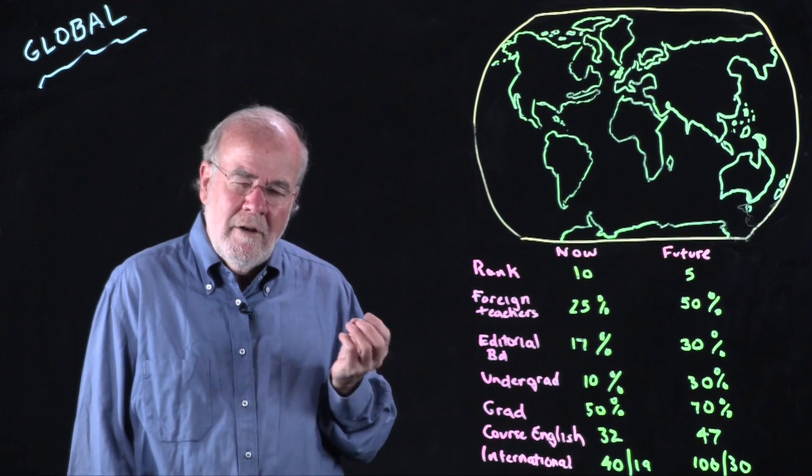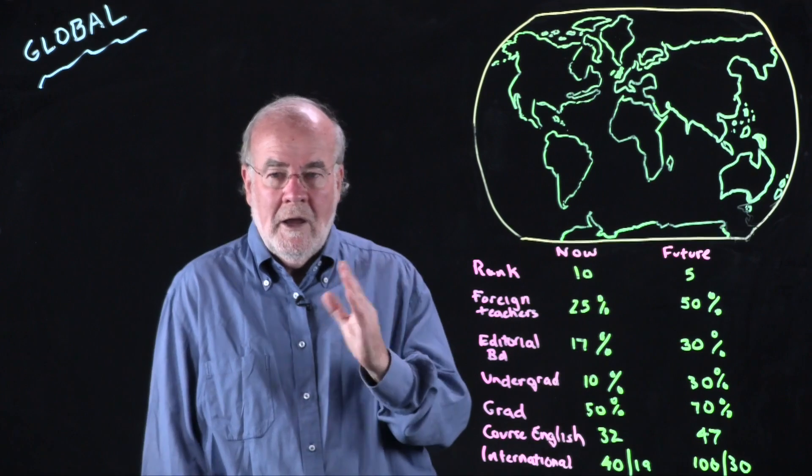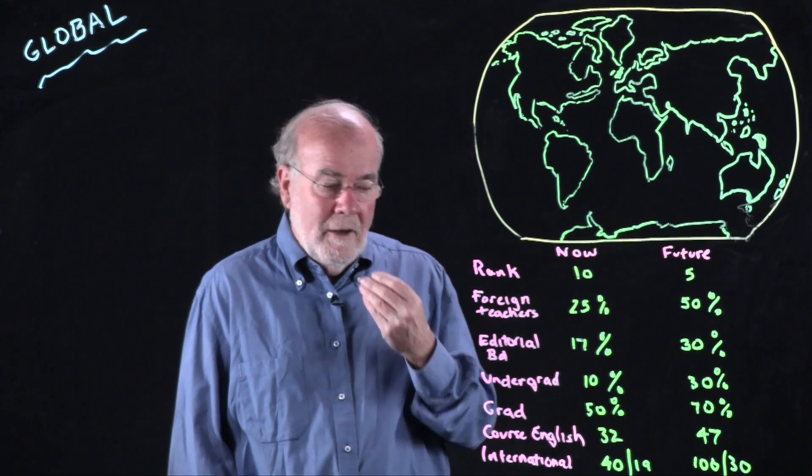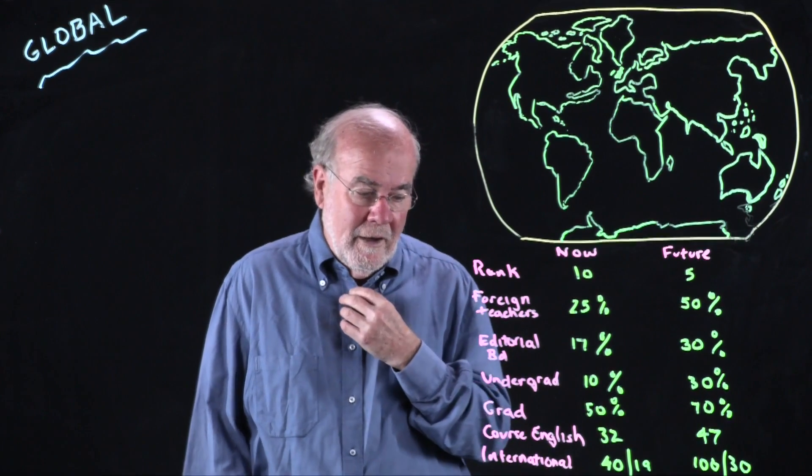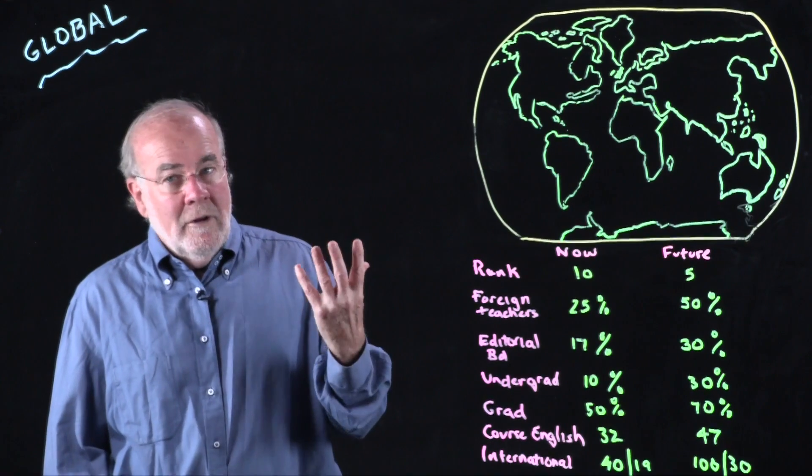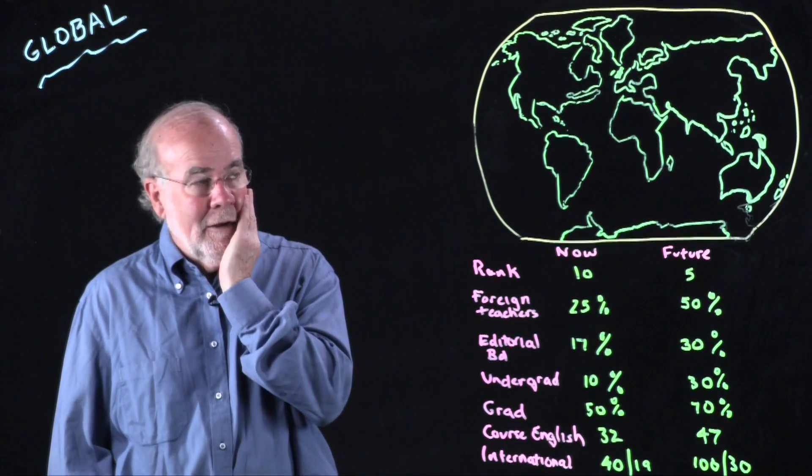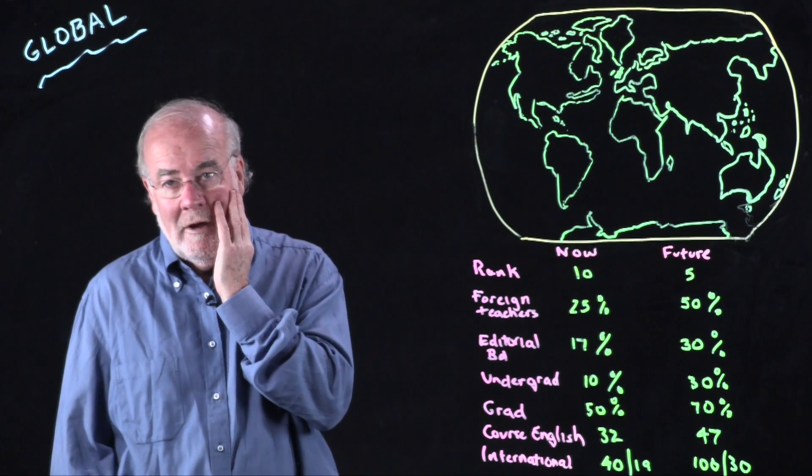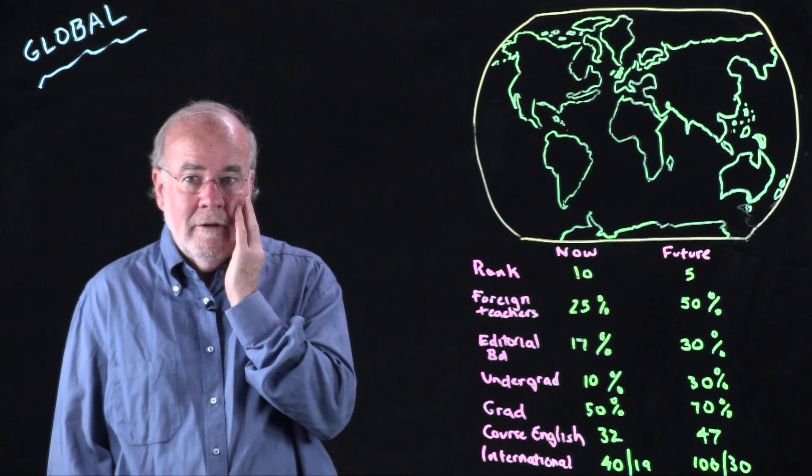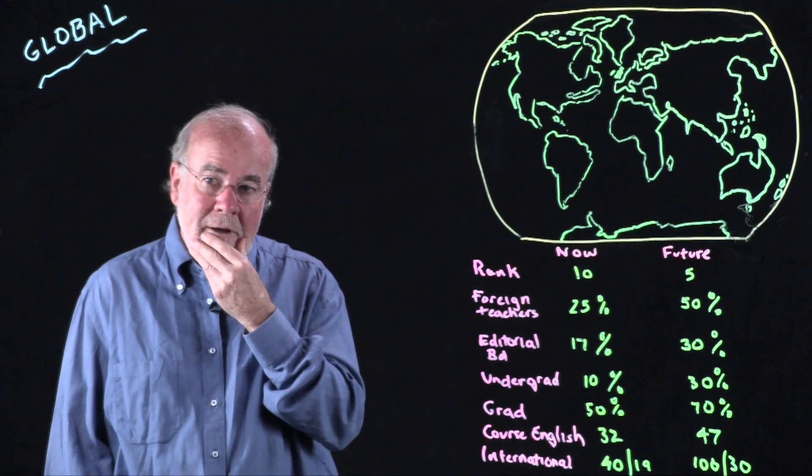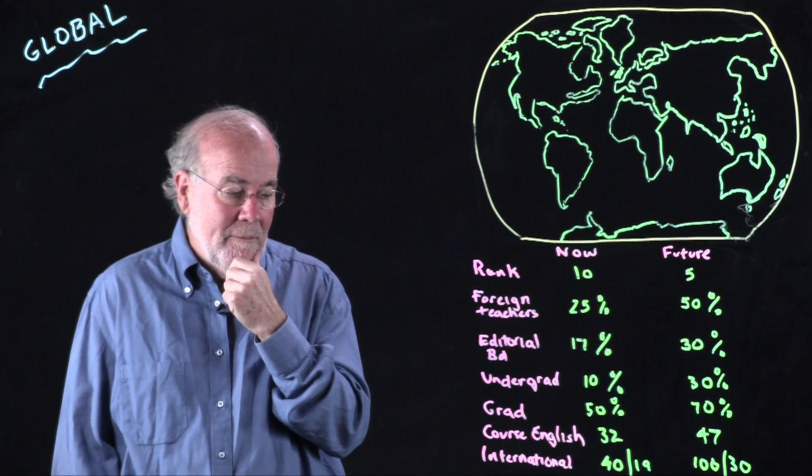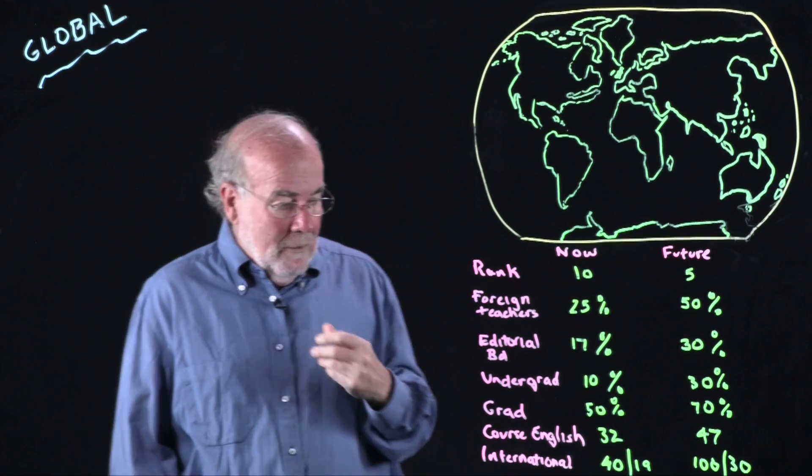You also see it in terms of student bodies. Whereas China doesn't seem to be so driven by needing international students to avoid a deficit, they recognize they want an international student body. Right now their undergraduate population in this particular department is 10 percent, and they want to get it up to 30 percent. By the way, China serves a huge population of students who might not be able to afford higher education in Canada, the US, the UK, or Australia, so they're attracting students because it's an affordable place to go. The cost of living within a Chinese university is very low compared with Western universities.